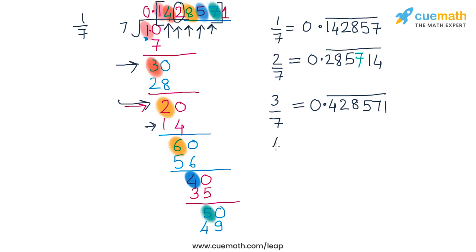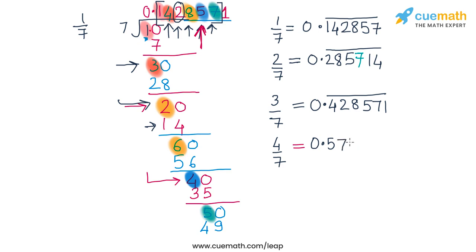Similarly for 4 by 7, the dividend in the first step is 4, which corresponds to the stage in the long division of 1 by 7 when the remainder was 4, and the corresponding multiplier was 5. So the decimal expansion of 4 by 7 starts from 0.5, then follows the same cycle: 5, 7, 1, 4, 2, 8. So 4 by 7 is 0.571428 with a bar on this block of 6 digits.